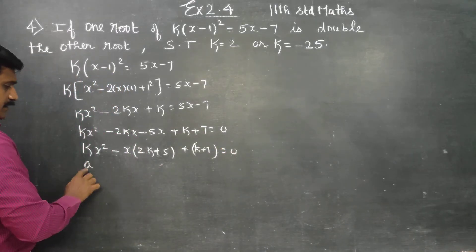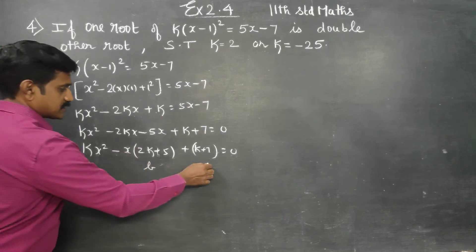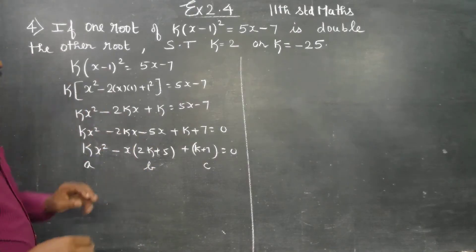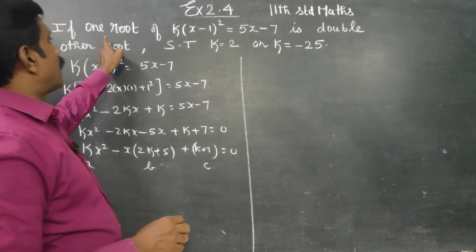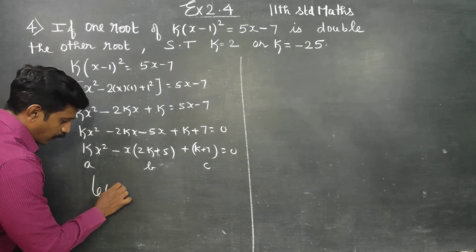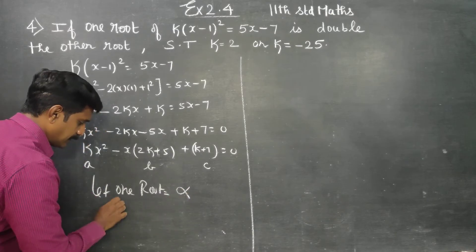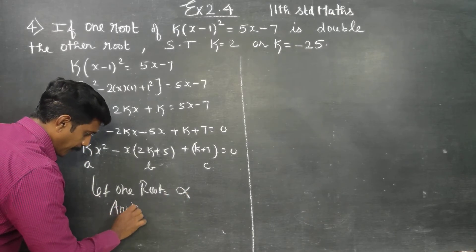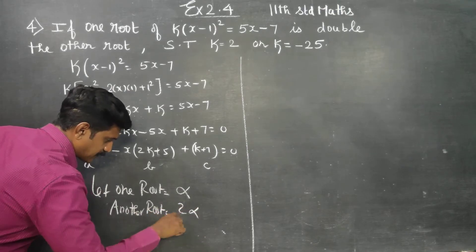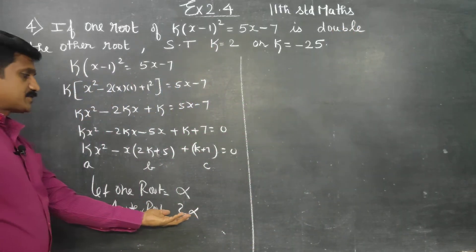This is my a, this is my b, this is my c. After finding the values of a, b, c, you can see: one root is double of the other. Let one root be equal to alpha, then another root will be 2 alpha — it's double.